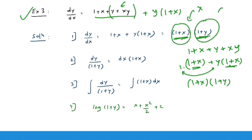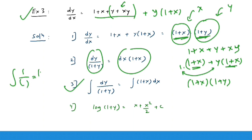After separation: dy/(1 + y) = (1 + x) dx. Integrate both sides: ∫ dy/(1 + y) = ∫ (1 + x) dx. Since 1/(something) integrates to log of that something, you get log(1 + y) = x + x²/2 + c. This question shows that if the equation is not simple, you must do some extra steps — like factoring — to make separation possible.